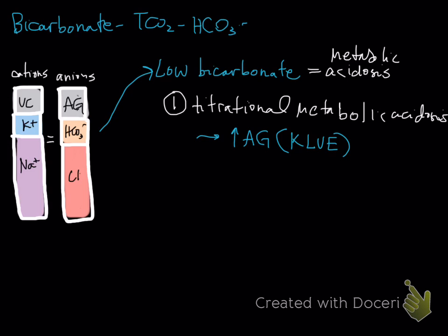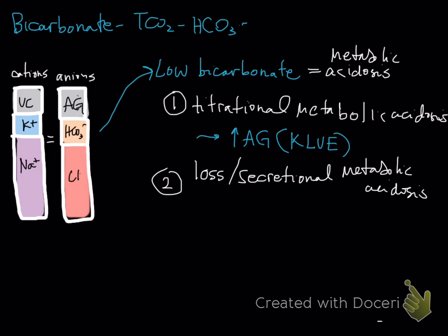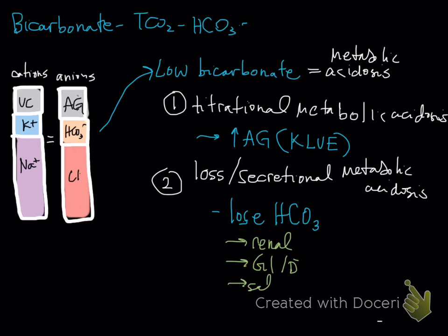You can also have secretional or loss metabolic acidosis, which is due to actually losing bicarb. Where do you lose bicarb? Almost the same places as we lose everything else — through the kidneys, so you can have renal loss; through the GI tract, such as diarrhea; and through saliva, which would be choke, usually in large animals. For renal loss, it's going to be acute kidney injury or certain drugs. GI diarrhea is seen most commonly in neonates, and more so in large animals. For saliva loss, you'd need the relevant history.